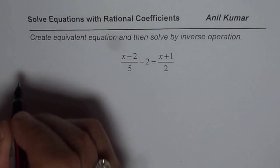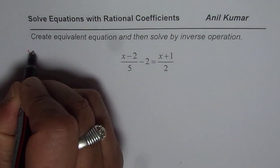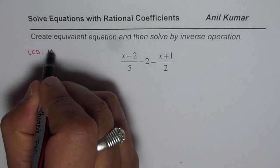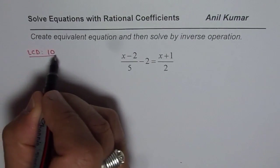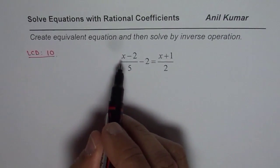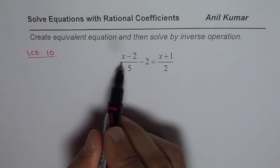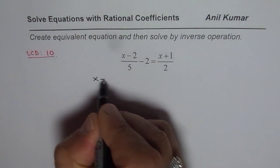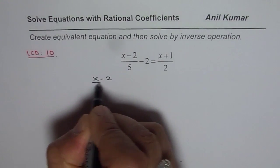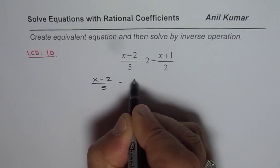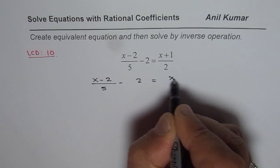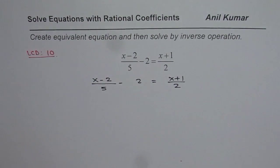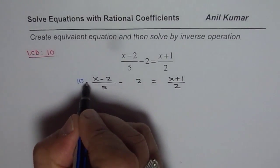The first step is to find the lowest common denominator. We have 5 and 2, so 5 times 2 is 10. That is the lowest common denominator, so I will multiply each and every term by 10. The equation given to us is x minus 2 over 5, minus 2, equals x plus 1 over 2. We will multiply each term by 10.